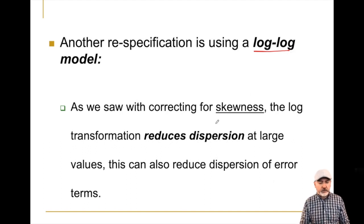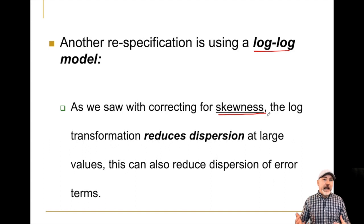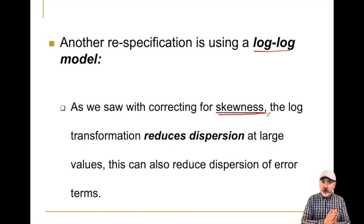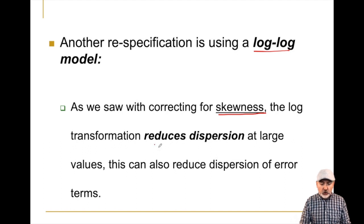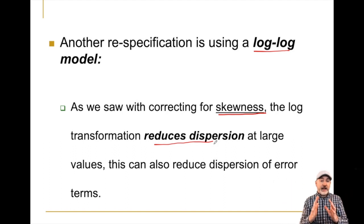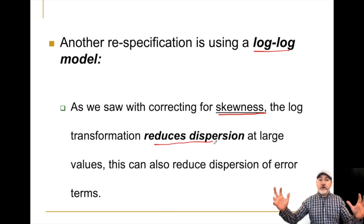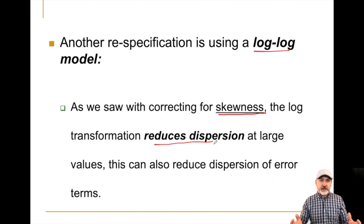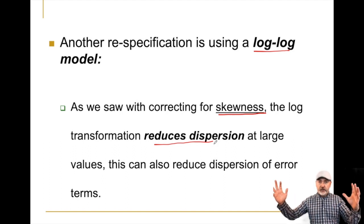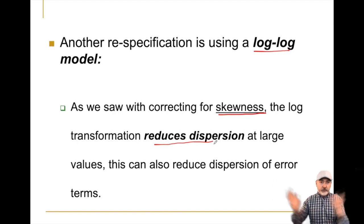Think about where this log transformation model came up in our previous discussions — we thought about it as a reaction to positive skew in the distribution of our variables, where we had more variability above the mean than below. With that log transformation and its built-in diminishing returns effect, it reduces the right-hand tail of the distribution, reducing dispersion of large values. In the context of the size proportionality factor issue, that's exactly what we want.